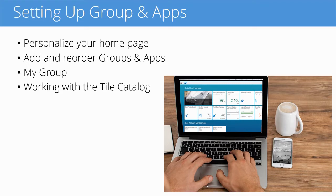I'll also show you how to work with the tile catalog, or the app catalog. If you want to add additional apps that are not on your launchpad, you can go into the tile catalog, search for an app, and then add it to a group on your launchpad.